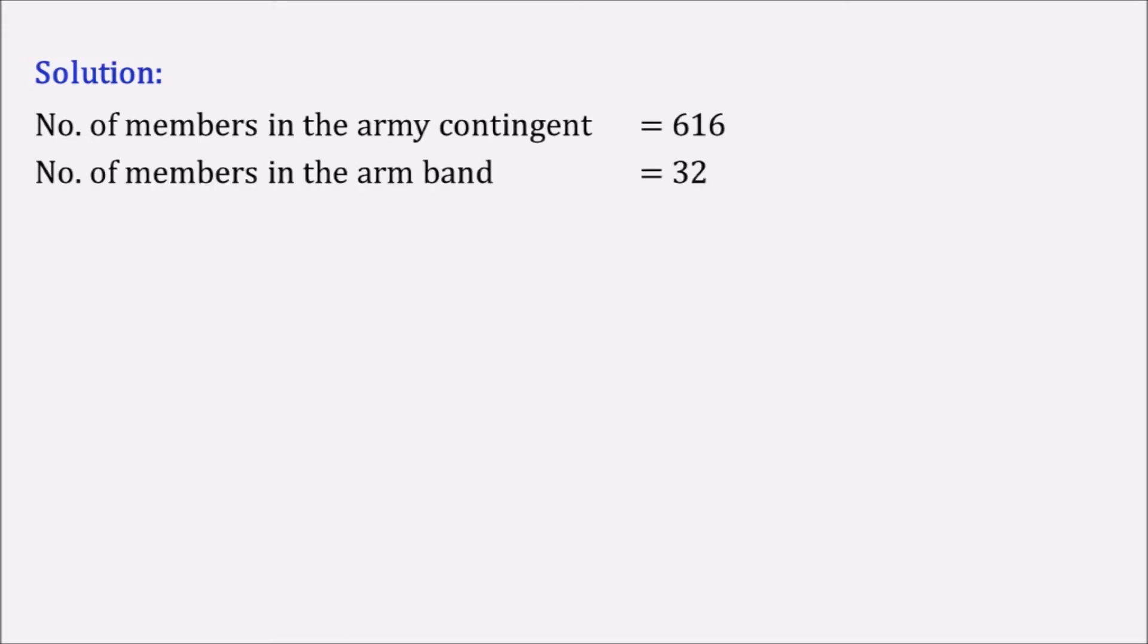Let us first identify what are the things given in the question and then we will see how we can resolve this. So we have number of members in the army contingent is equal to 616. Number of members in the army band is equal to 32.